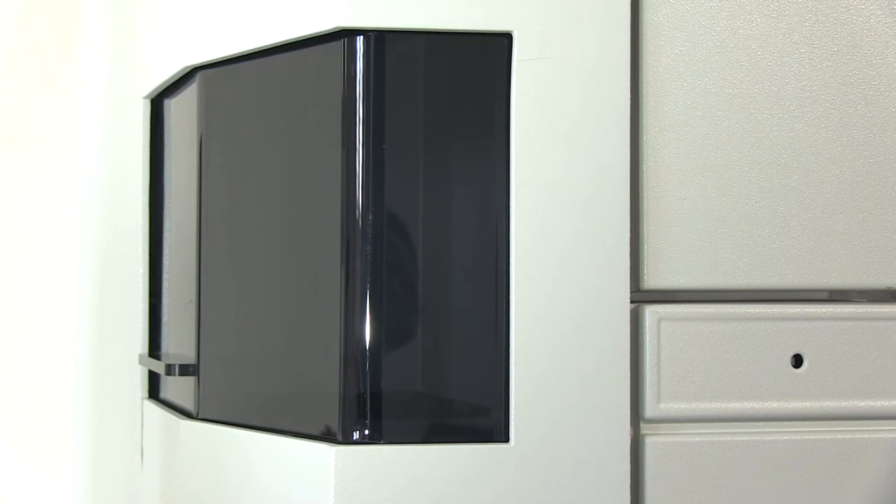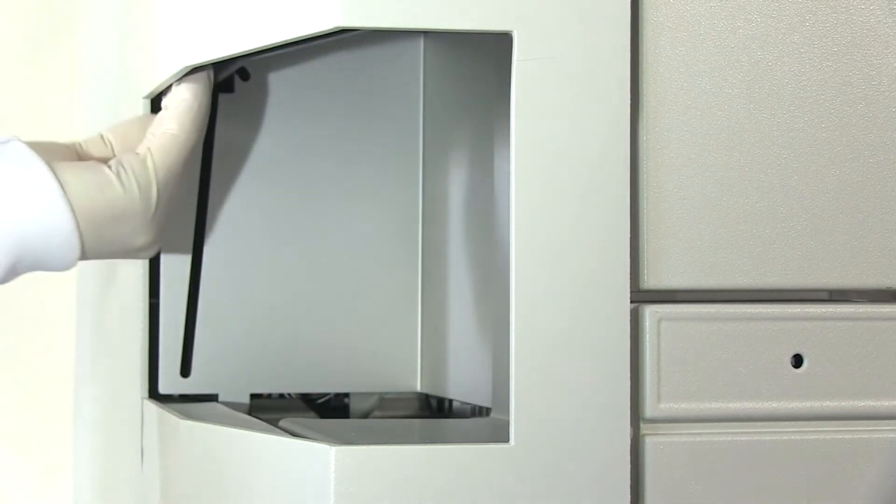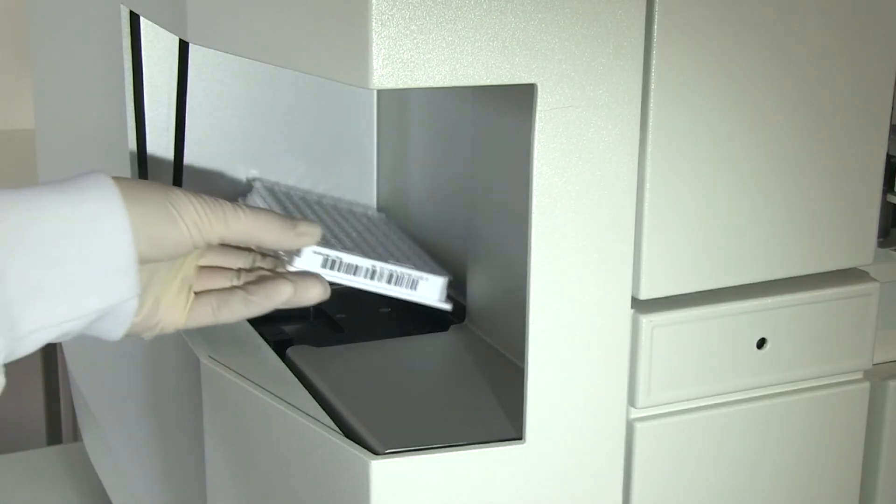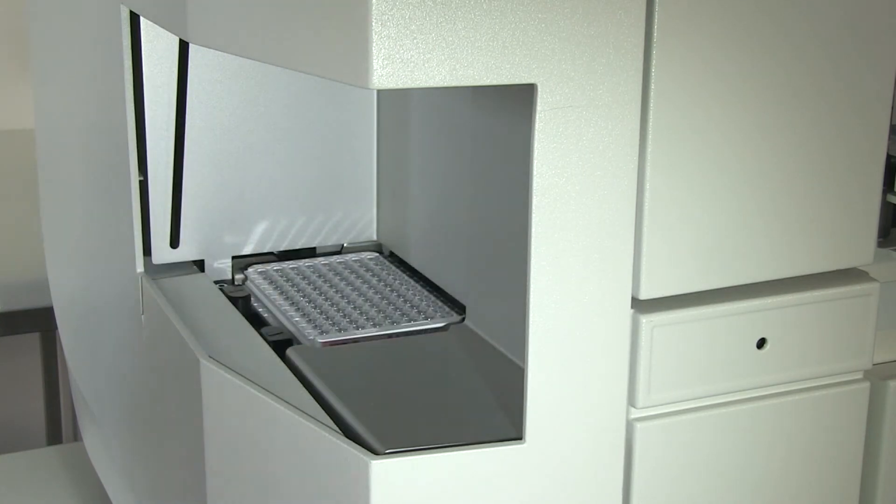To load a microplate, open the cover of the plate loading station by moving it upwards and hinge it into the upper holder. Insert the right edge of the microplate into the plate carriage with the frame barcode visible. The Tango Infinity loads the plate automatically.